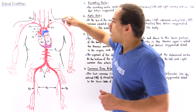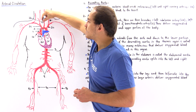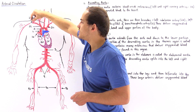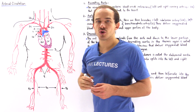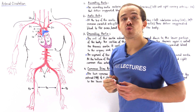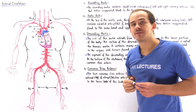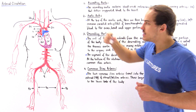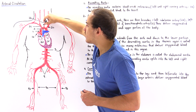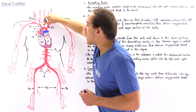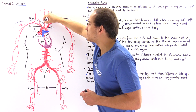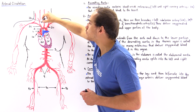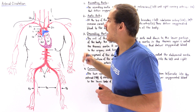The final branching point, labeled 2c, is called the brachiocephalic artery. The brachiocephalic artery travels a short distance before it actually branches itself, splitting at a particular location into two important arteries.